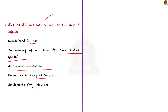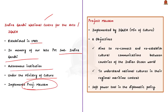IGNCA is the implementing agency of Project Mausam. Project Mausam works at two levels. At the macro level, it aims to reconnect and reestablish cultural communication between countries of the Indian Ocean, enhancing understanding of cultural values and concerns among Indian Ocean region countries. At the micro level, the project focuses on understanding national cultures in their regional maritime context. Project Mausam acts as a soft power tool in India's diplomatic policy.